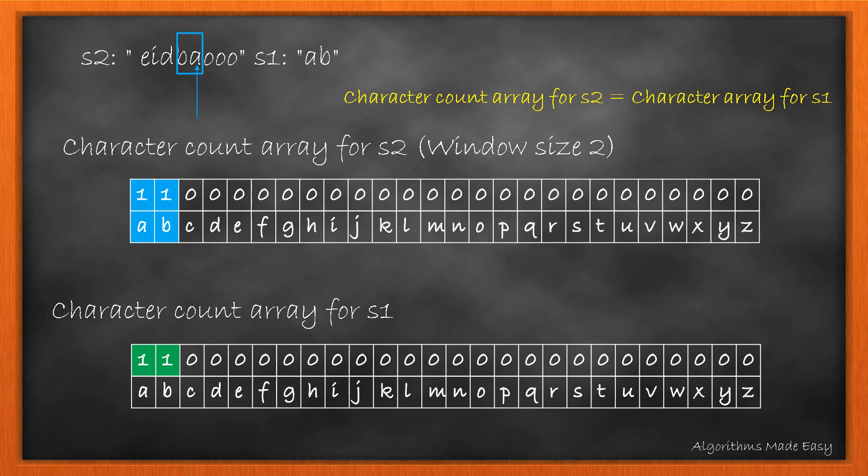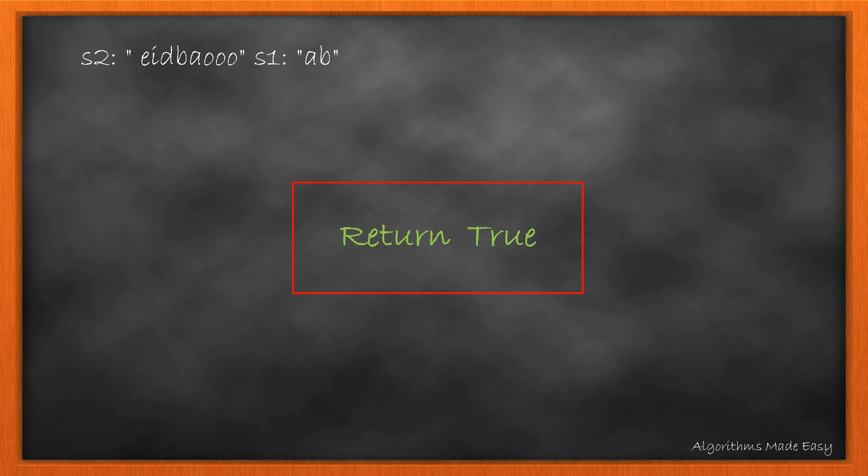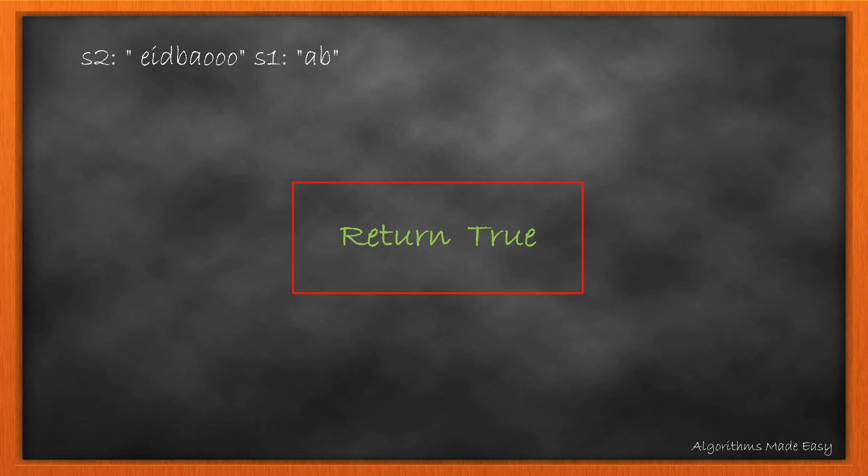As we can see we found a match, we do not need to traverse ahead and we will return true. If we would have not found a match till the end, we would have returned false. The time complexity of our algorithm is O of L1 plus L2, where L1 and L2 are the lengths of the strings. The space complexity here is a constant as the size of our array will never vary with the value of L1 and L2.